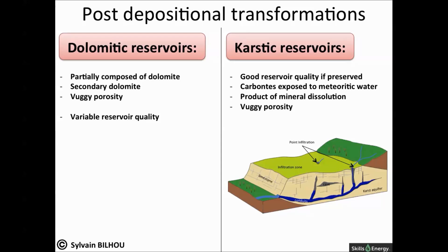Karstified limestone and dolomite represent a second major group of carbonate reservoirs not directly linked to depositional environment. Karst is a product of mineral dissolution. It develops where carbonates are exposed to meteoric water. Karst features are caves, collapse breccias, dissolution-enhanced joints, fractures, and vugs. The presence of karst does not guarantee a petroleum reservoir, as the karstic surface may not survive reburial.